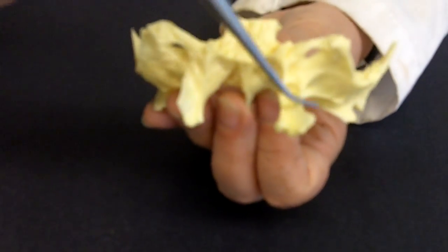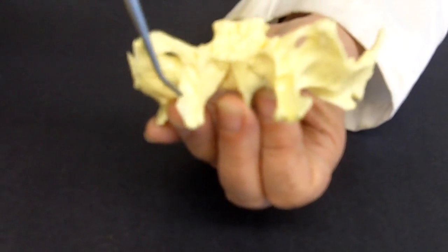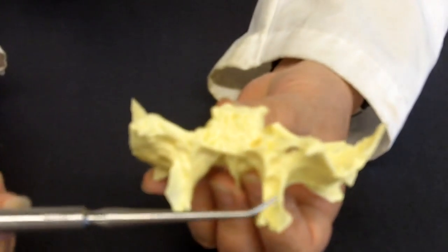We have these pterygoid processes, medial and lateral pterygoid processes, which are for the attachment of some of the chewing muscles.